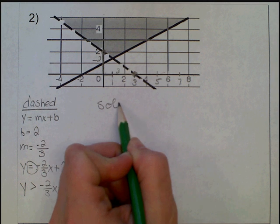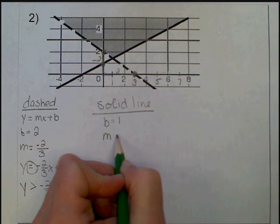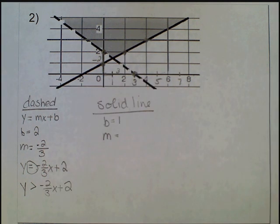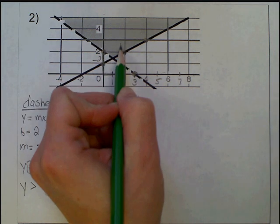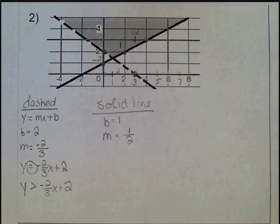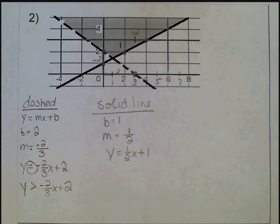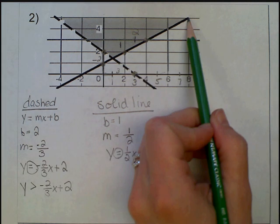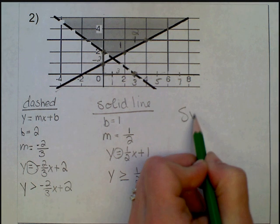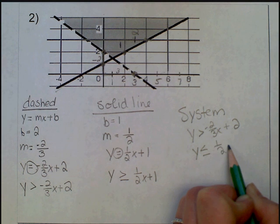For the solid line, the y-intercept is 1, so b is 1. Using the slope triangle, I go up 1 and run 2 — remembering the scale has a mark in between — so the slope is 1 over 2, or one-half. The equation is y equals one-half x plus 1. It's a solid line and shaded above, so y is greater than or equal to one-half x plus 1. My system for example 2 is: y is greater than negative two-thirds x plus 2, and y is less than or equal to one-half x plus 1.